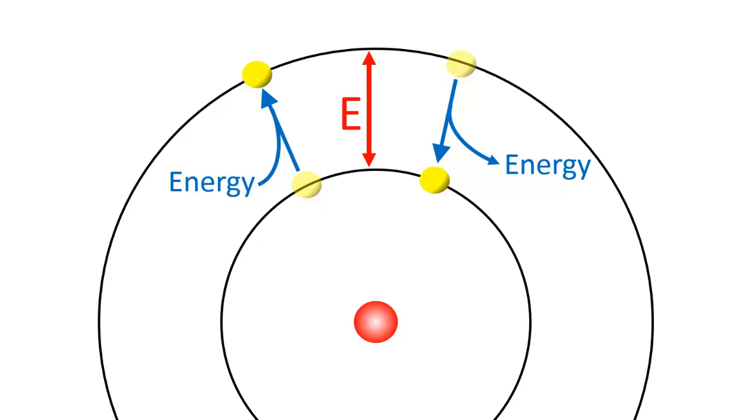Since the electrons are never observed between orbits, the jump from one orbit to another orbit is instantaneous. The electrons literally teleport between orbits.